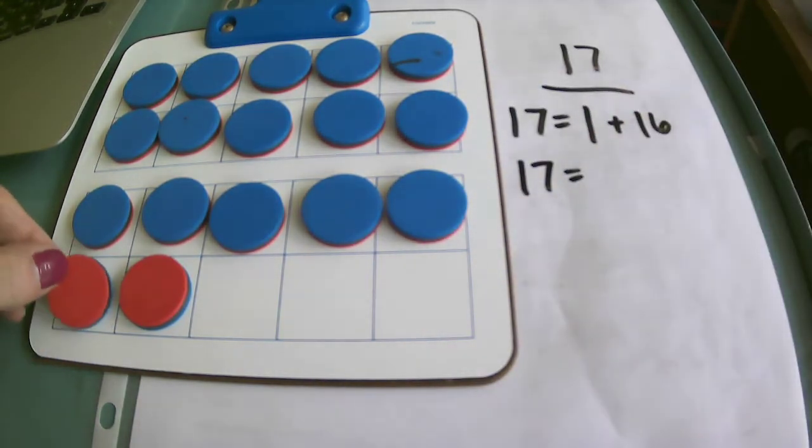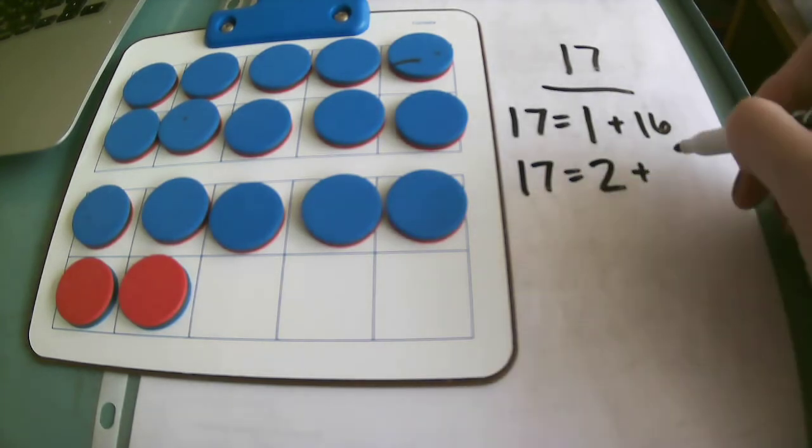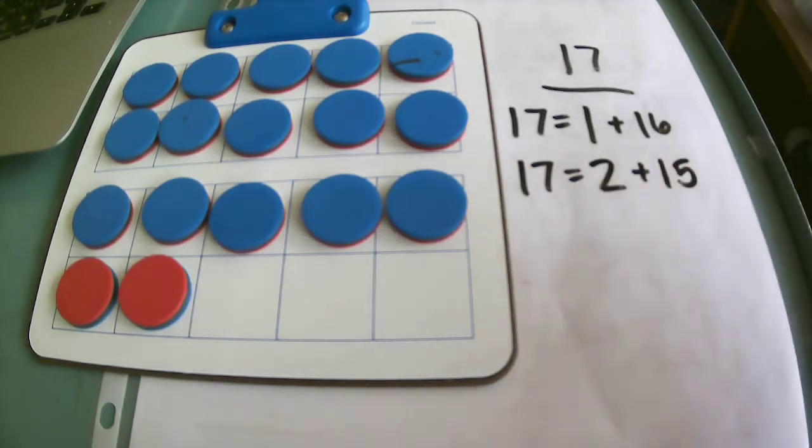If I flip over another counter, I now have 2 red and 15 blue, because 2 and 15 together give me 17.